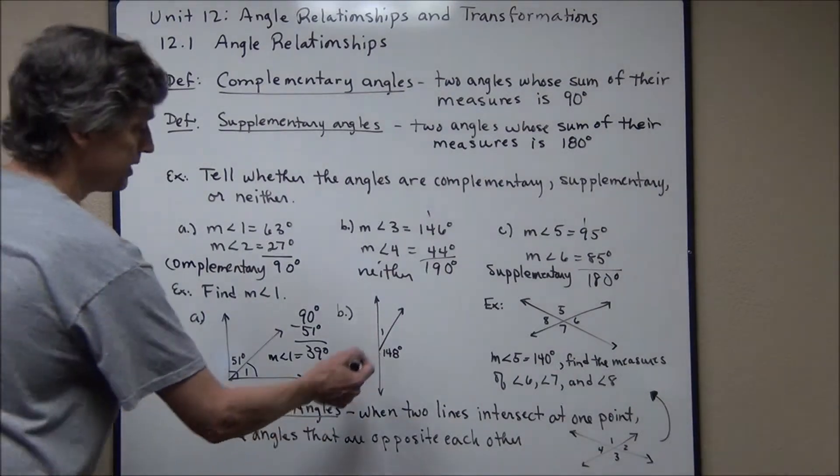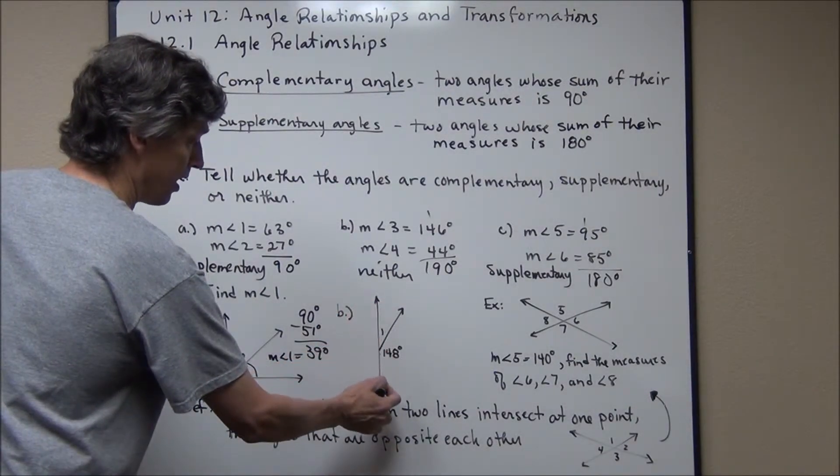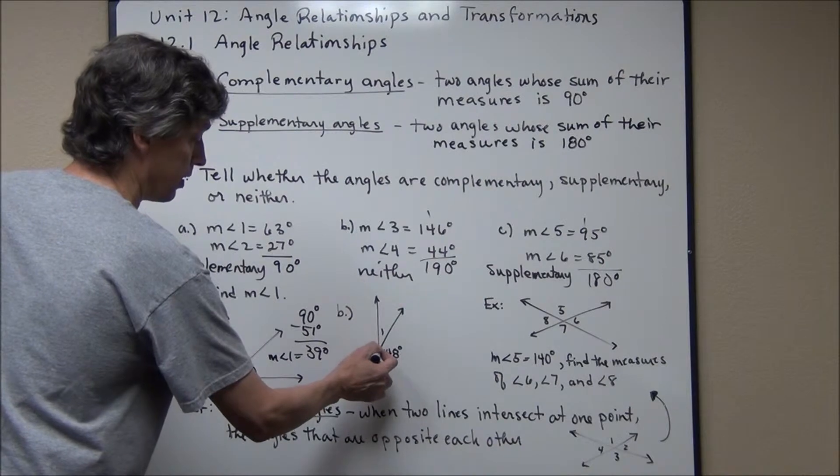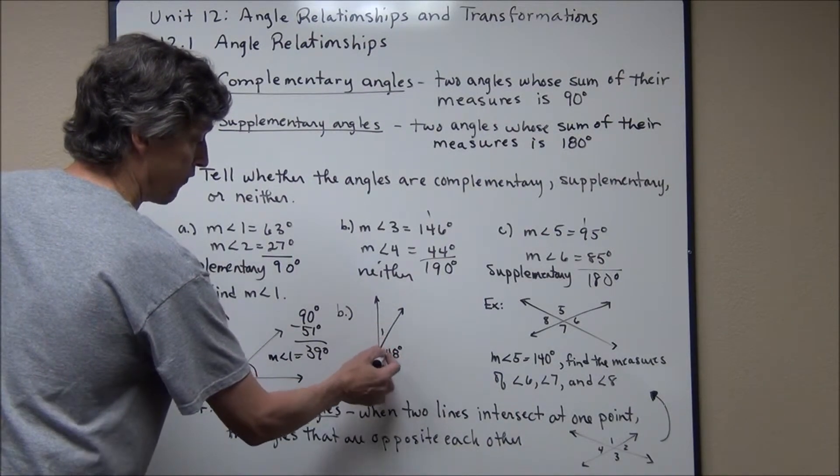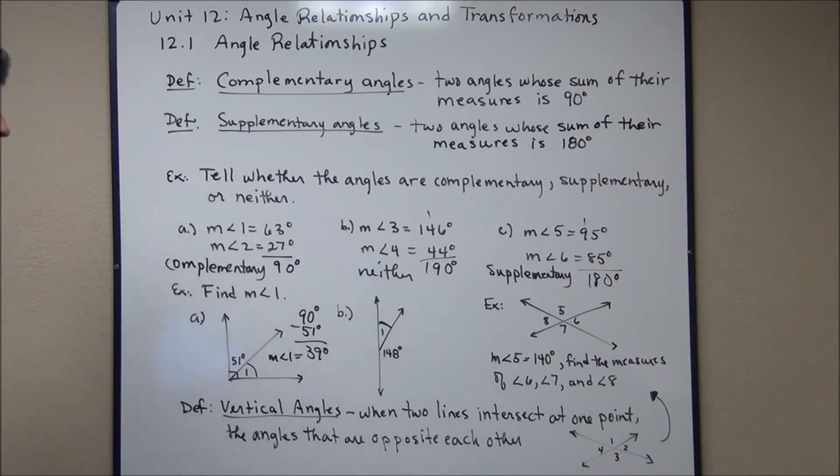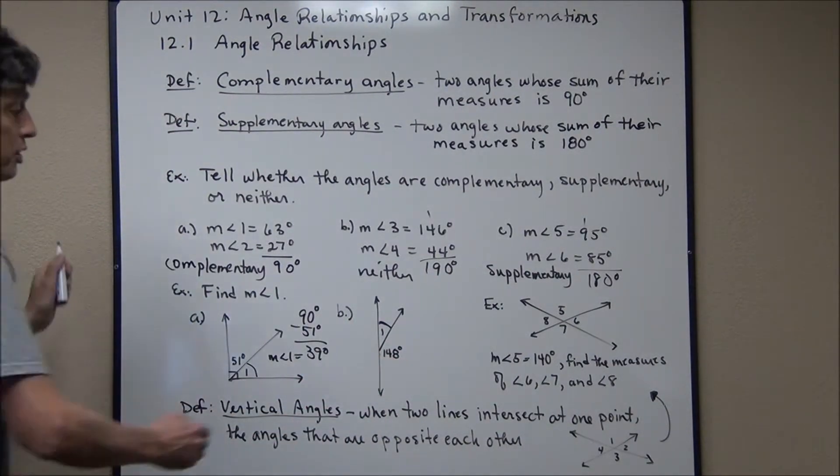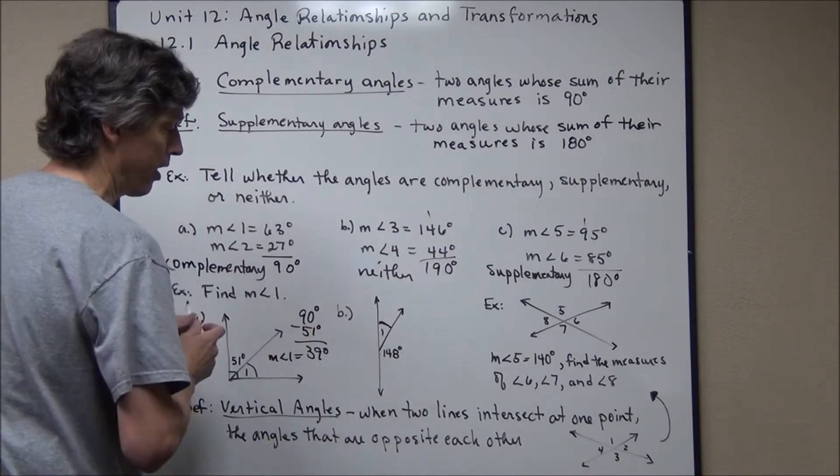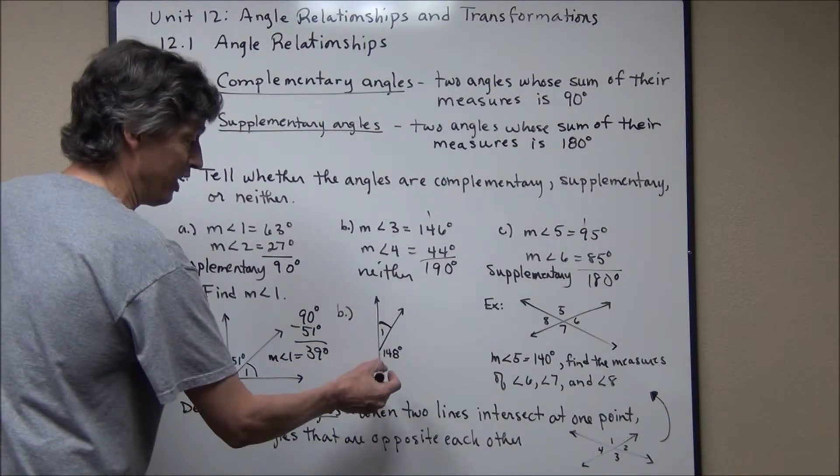Similarly, instead of a right angle, if we have a straight line and we have a third or an extra ray here drawn in so that we form two angles, angle one here, which is the angle we're trying to find, and this angle, which is given, because they form a straight line, these are called a linear pair. They form a line, linear pair.